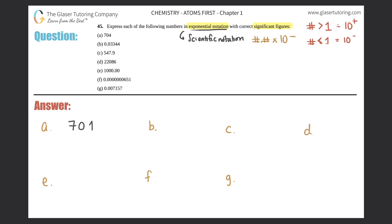Letter A: 704. First, where is the decimal? If you don't see one, it's assumed to be at the end. Scientific notation always puts the decimal right after the first non-zero digit, so we move it between the 7 and 0. That's two bunny hops, so it's times 10 to the second. The original number was greater than one, so it's a positive two. You don't have to write the plus, but for negatives you must.